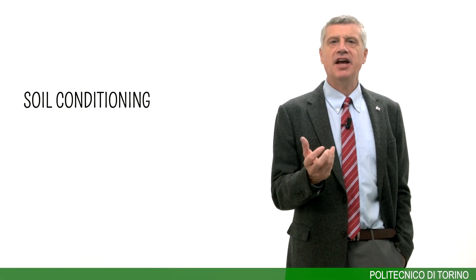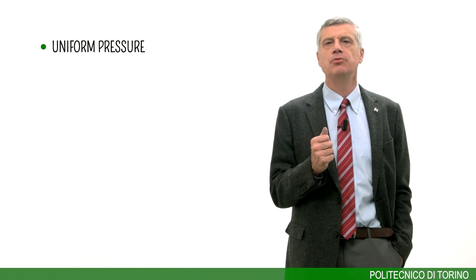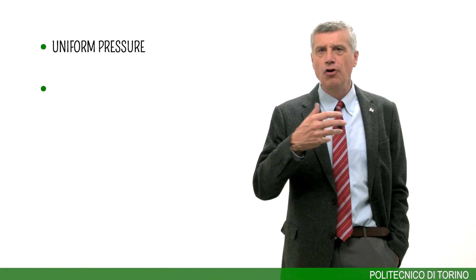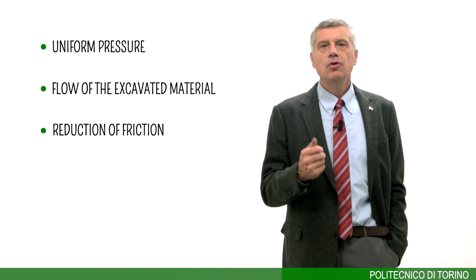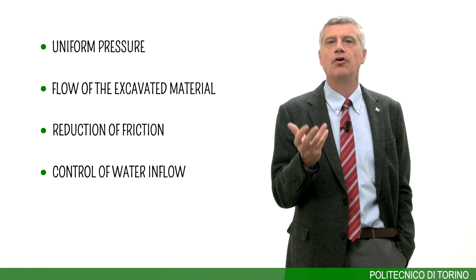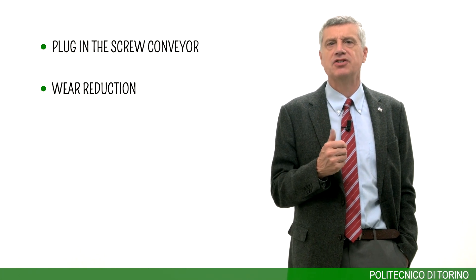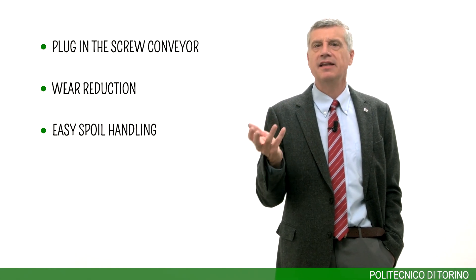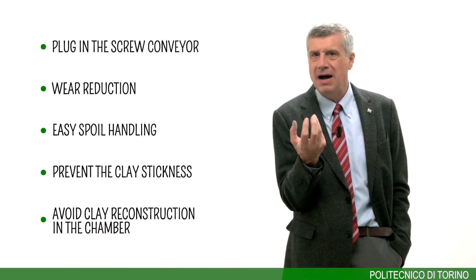The conditioning agents can be injected ahead of the cutting head, in the pressure chamber, and along the screw conveyor. The main objectives of soil conditioning in EPB tunneling are: to guarantee a uniform distribution of pressure in the chamber, which is the key aspect to guarantee control of underground stability; to control the flow of excavated material through the cutterhead and in the screw conveyor; to reduce friction forces in the bulk chamber; to control water flow thanks to the reduction of soil permeability; to create a plug in the screw conveyor; to reduce wear of all mechanical parts in contact with the soil; to allow easy spoil handling; and, when tunneling in clay, to prevent clay sticking to mechanical parts and to avoid excavated clay reconstituting as a mass in the bulk chamber.